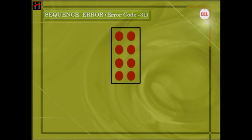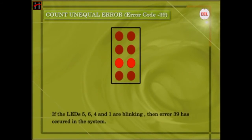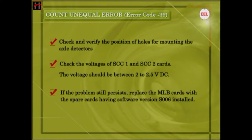Sequence Error: If the LEDs 5, 6, and 1 are blinking, then Error 31 has occurred in the system. If any of these errors occur, carry out the following checks: 1. Check and verify the position of holes for mounting of axle detectors. 2. Check the voltages of the SDC1 and SDC2 cards — the voltage should be between 2 to 2.5 volt DC. If the problem still persists, replace the MLB cards with spare cards having software version S006 installed.